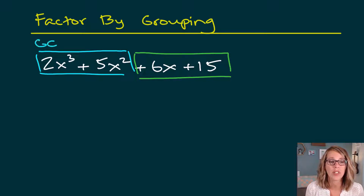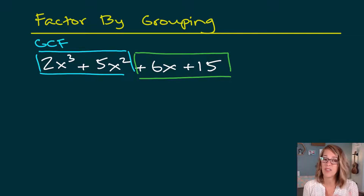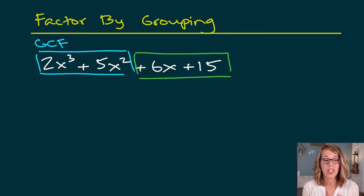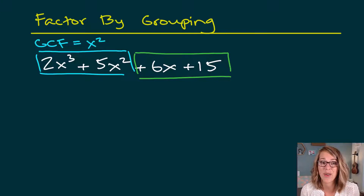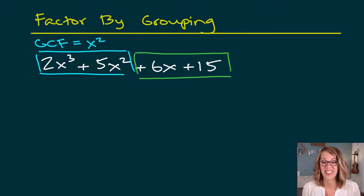Looking at the blue pair, let's see what goes into 2 and 5 — nothing, so the coefficients share no common factor. Next, let's look at the x's: what goes into both x cubed and x squared? We get x squared.